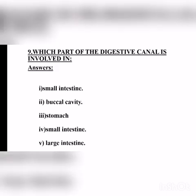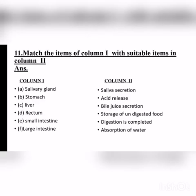Which part of the digestive canal — that is, the alimentary canal or digestive tract — is involved in the following? First: absorption of food — small intestine. Second: chewing of food — buccal cavity. Third: killing of bacteria — stomach. Fourth: complete digestion of food — small intestine. Fifth: formation of faeces — large intestine.